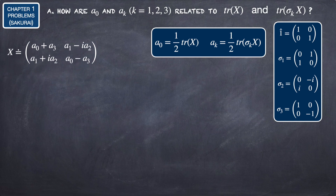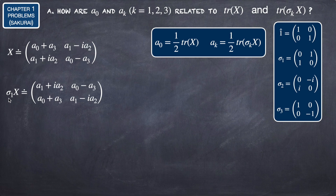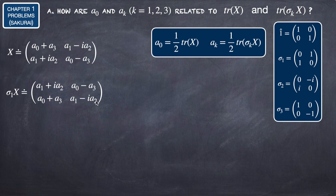Now let's calculate sigma_K multiplying X. We start with sigma1 multiplying X: the first row of sigma1 times the first column gives A1 plus i*A2; the first row times the second column gives A0 minus A3; the second row times the first column gives A0 plus A3; and the second row times the second column gives A1 minus i*A2. The trace of this matrix is 2*A1, so A1 equals 1/2 times the trace of sigma1*X, exactly as obtained before.